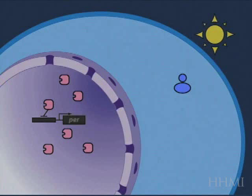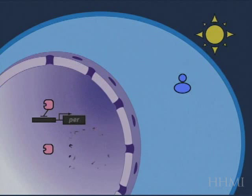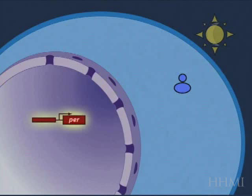And in the morning, when the sun comes up, these protein molecules start to turn over, they degrade and disappear over the course of several hours, leading to the turn-on of the gene, which begins the next cycle, the next production of RNA.